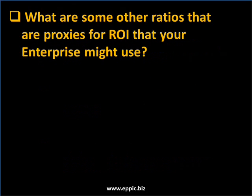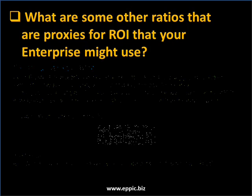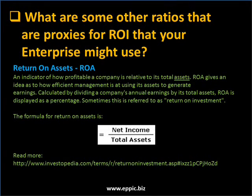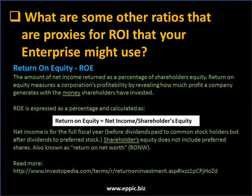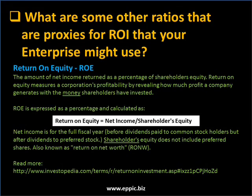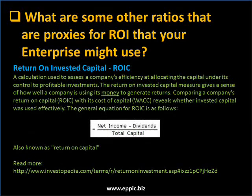What are some of the other ratios that are proxies for ROI that your enterprise might be using or considering? There's Return on Assets, ROA. There's also Return on Equity, ROE. And there's Return on Invested Capital, ROIC.